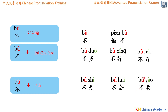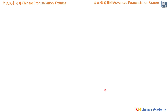In short, the character 不 in most cases is pronounced the fourth tone — the falling tone bù. And there is only one situation where it is pronounced as a second tone bú, and that is when it is followed by a fourth tone. This is for the very simple reason that it is too hard to pronounce it as a falling tone before another falling tone.